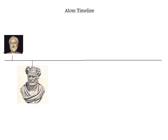Next on the timeline is Democritus. In 460 B.C., Democritus developed the idea of the atom. He asked himself: if you break a piece of matter in half and then break it in half again, how many breaks will you have to make before you can break it no farther? He thought that it eventually would get to its smallest point, which he called the atom.